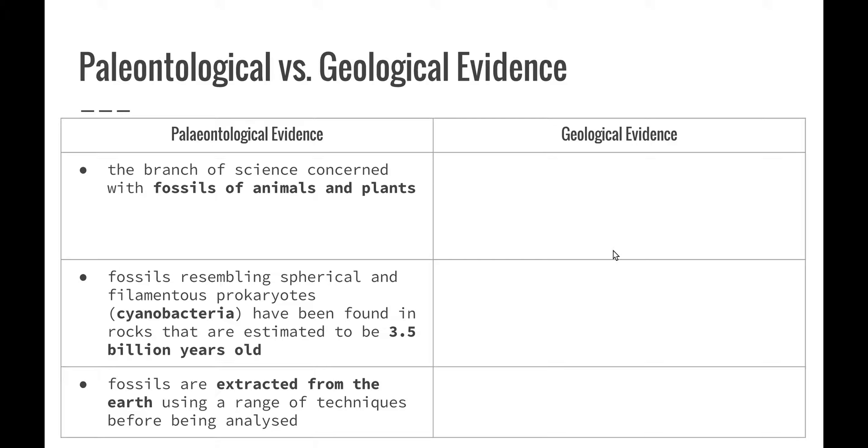So the difference between paleontological evidence and geological evidence. So geology is the branch of science that deals with the earth's physical structure and substance, its history and the processes that act on it. So geology refers to actually looking at the earth itself. What is it made up of? How is it put together? How did the earth itself form? And what are the different processes?